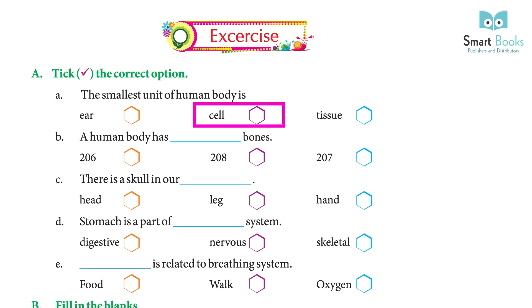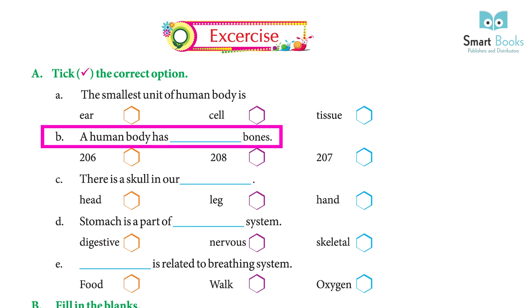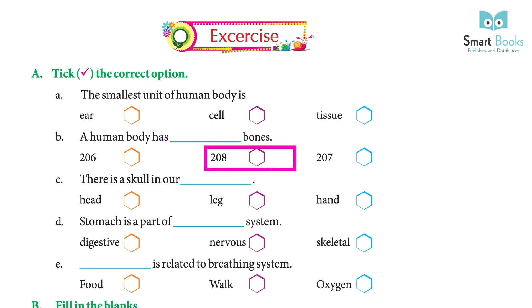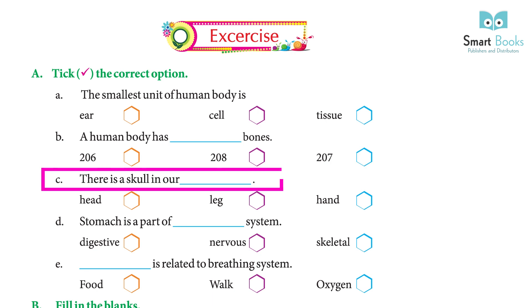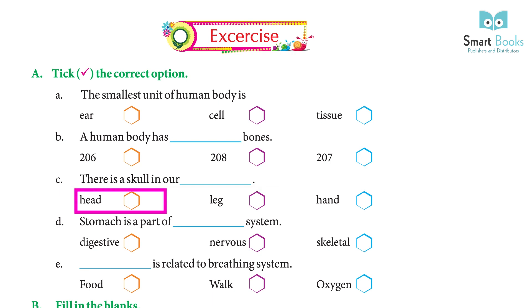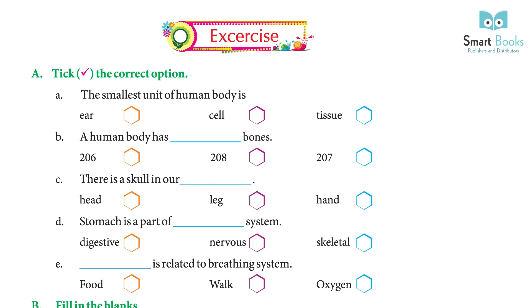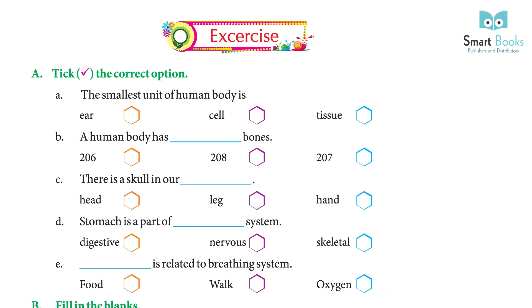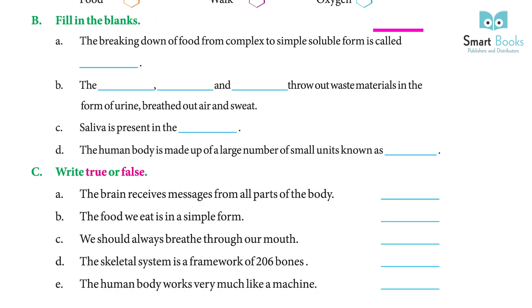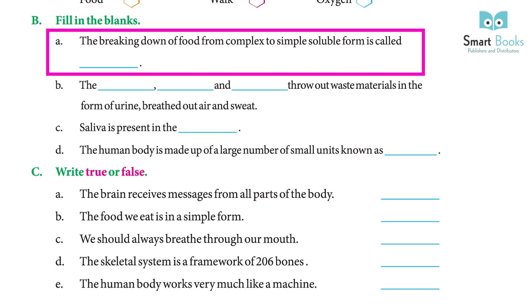Exercise A — Take the correct option: (a) The smallest unit of the human body is — cell, tissue. Answer: cell. (b) A human body has how many bones — 206, 208, 207. Answer: 206. (c) The skull is in our — head, leg, hand. Answer: head. (d) The stomach is part of the — digestive, nervous, skeletal system. Answer: digestive. (e) What is related to the breathing system — food, walk, oxygen. Answer: oxygen.